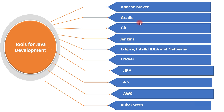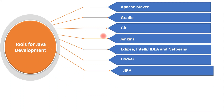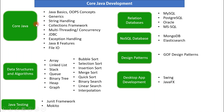Finally, here are some commonly used utility libraries for Java development: Guava, Apache Commons libraries, Jackson JSON libraries, Google JSON libraries, logging libraries, HTTP libraries, XML parsing libraries, and collection libraries. As a Java developer you should be familiar with all these commonly used utility libraries.